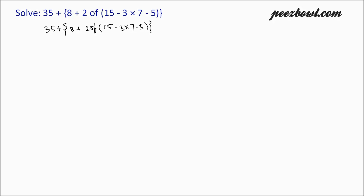In our case, we have two brackets. The first one is the curly bracket and the second bracket is the round bracket. For this arithmetic operation, we need to first work on the innermost bracket. In our case, this is the round bracket, so we need to work on the round bracket first.